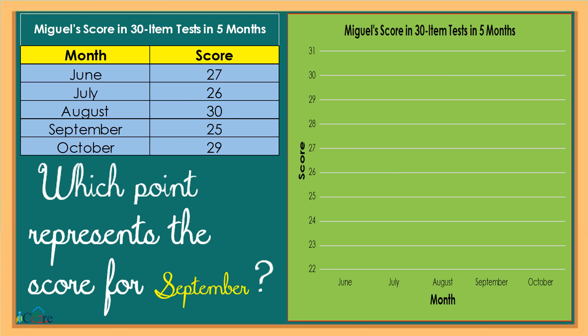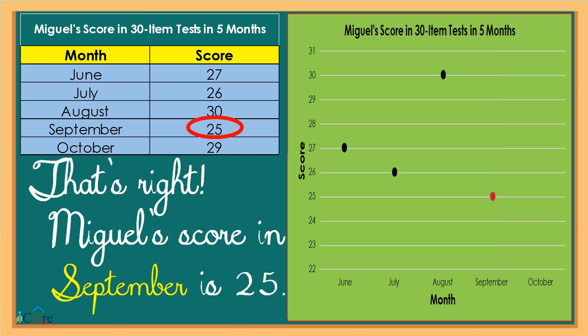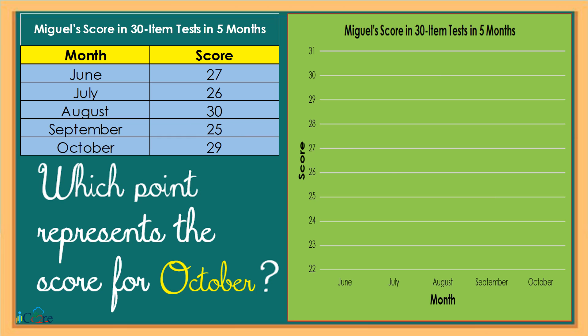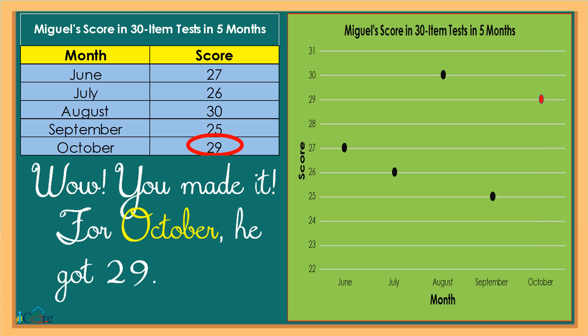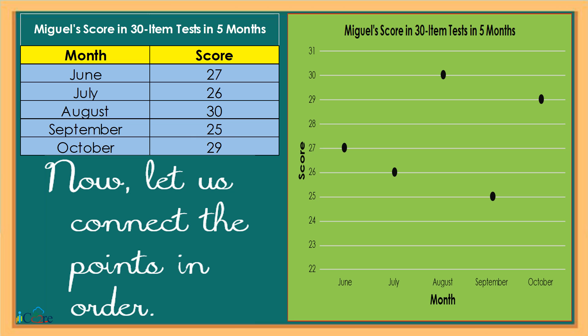Which point represents the score for September? That's right! Miguel's score in September is 25. Which point represents the score for October? Wow, you made it! For October, he got 29. Now, let us connect the points in order.